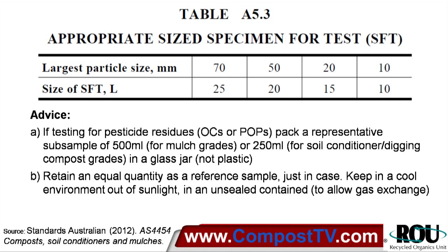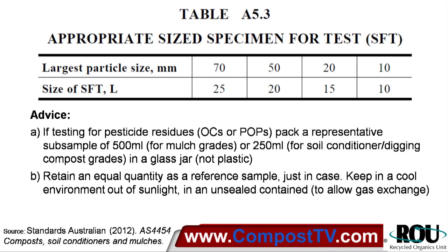You can't just grab a sample from anywhere in the pile and hope it's representative. The sample for testing needs to be a statistically valid and representative sample of the entire mass of material, with incremental samples of a suitable size taken from a large enough number of sampling sites in a manner that avoids bias. These incremental samples are then mixed to form a representative composite sample, which best represents material of average characteristics for the entire pile. A representative subsample for tests can then be obtained from this composite sample.